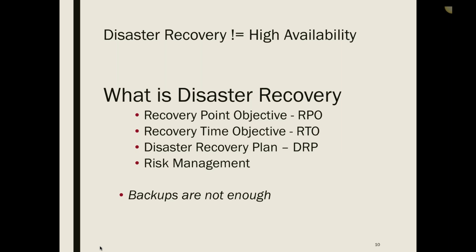The main takeaway before we get into features: disaster recovery does not equal high availability. High availability is keeping data highly available — if bad data changes, it can easily propagate to your other copies. For disaster recovery there are key objectives: Recovery Point Objective (RPO) — how much data is the business willing to lose — and Recovery Time Objective (RTO) — how long are you willing to take to bring data back. Backups alone will not be enough as your last line of defense.